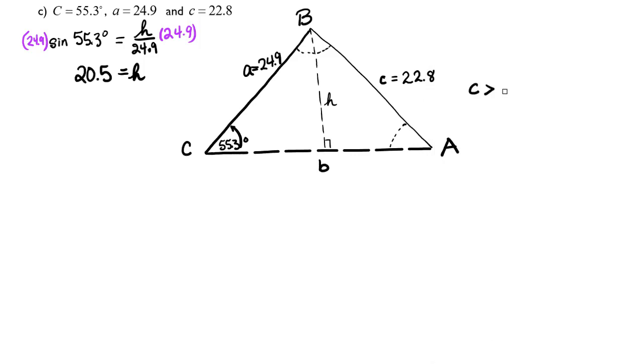Notice that side C is greater than the height of the triangle, and that side C is less than A, which means we now have what is called an ambiguous case, which means we could have two different triangles.